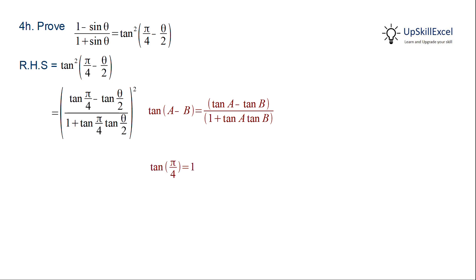Now we know that tan pi by 4 is equal to 1. Substituting this we get 1 minus tan theta by 2 divided by 1 plus tan theta by 2.